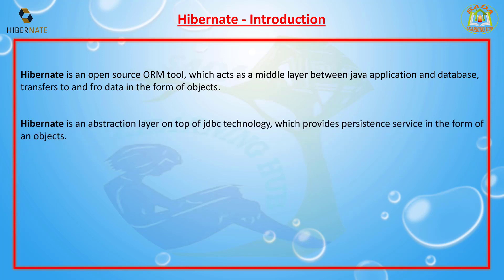Hibernate is an abstraction layer on top of JDBC technology — JDBC means Java Database Connectivity — which provides persistent services in the form of objects. JDBC is the middle layer between a Java application and the database. In JDBC there are some drawbacks, and all those drawbacks are eliminated in Hibernate.